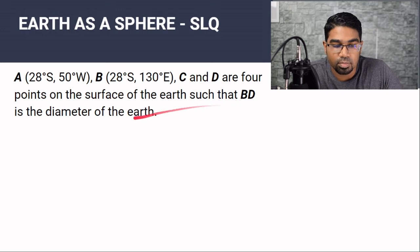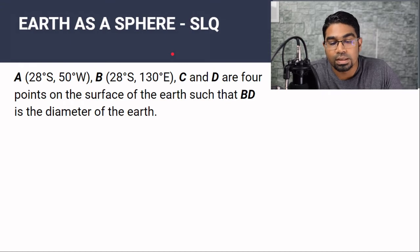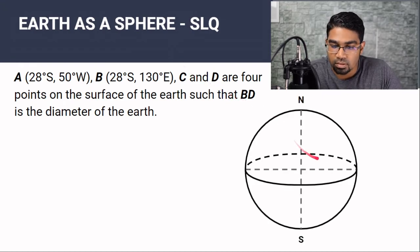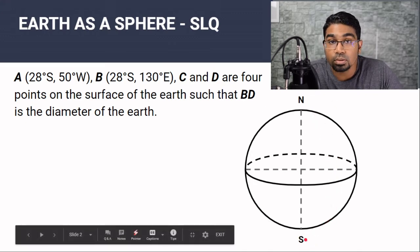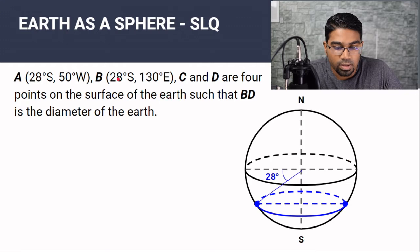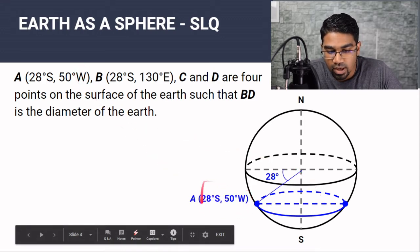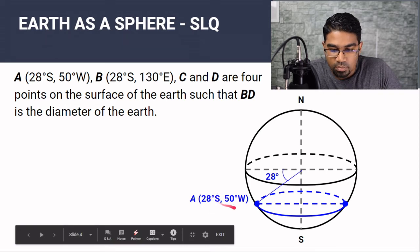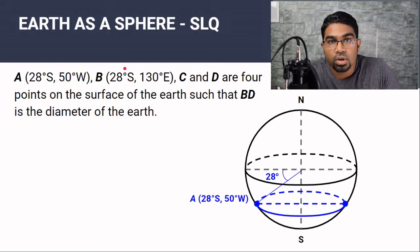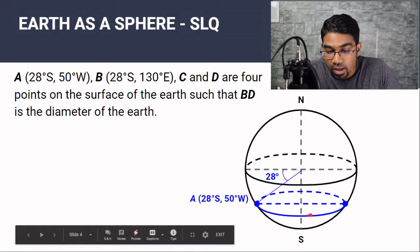A, B, C and D are four points on the surface of the Earth such that BD is the diameter of the Earth. Points A and B — the locations are given to us. The easiest thing to do is to sketch a diagram. This is the Earth with the north and south poles. A and B are both at 28 degrees south. Since A is on the western hemisphere, A is at 28 degrees south and 50 degrees west. Notice this would be 130 degrees east — we already know that B lies on the same latitude, 28 degrees south.